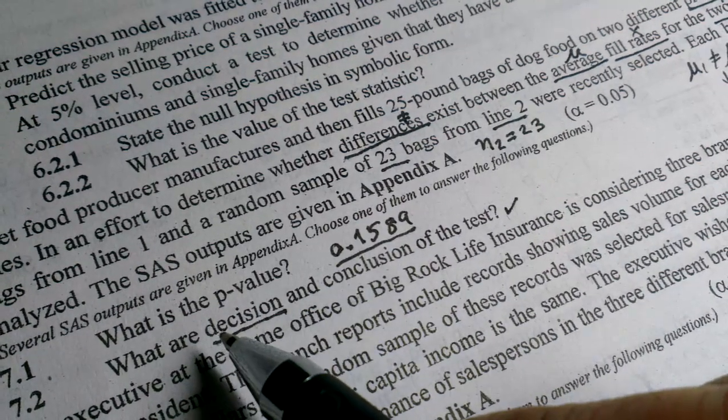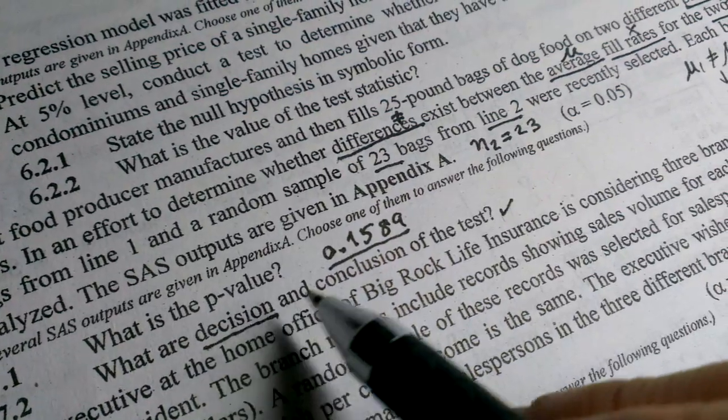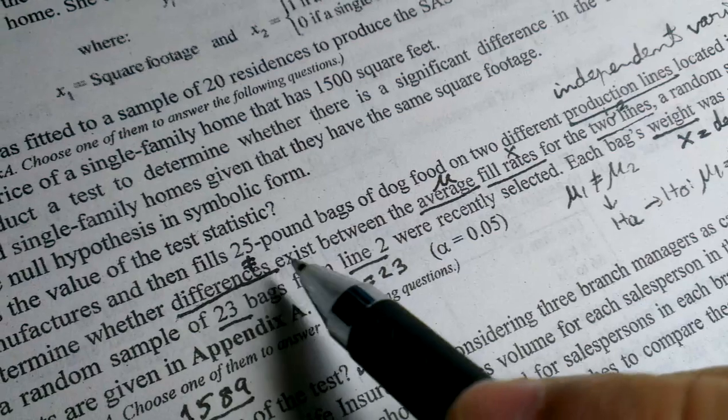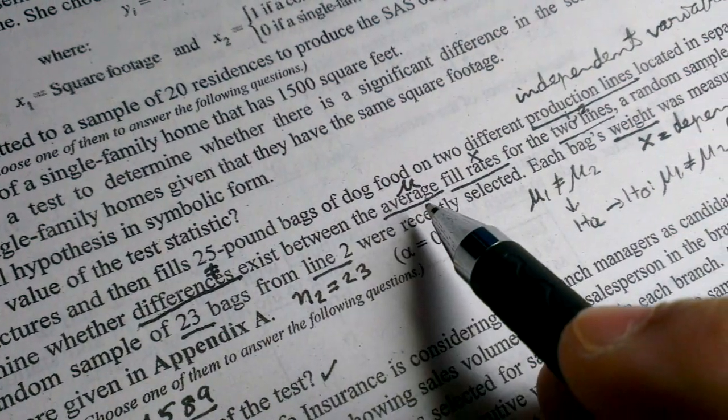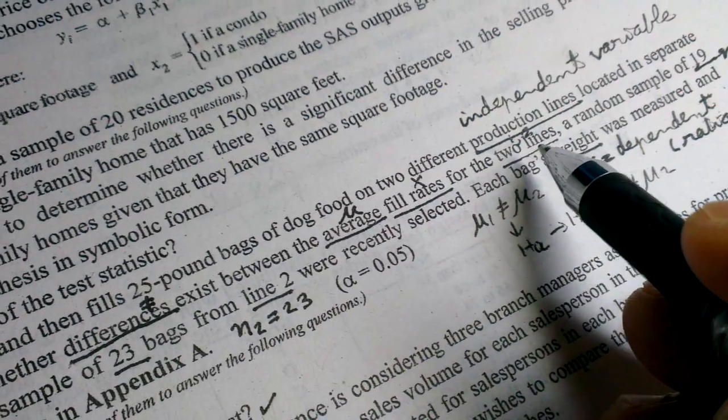H0 is not rejected, so the conclusion is that no difference exists between the average fill rates for the two lines. That's it.